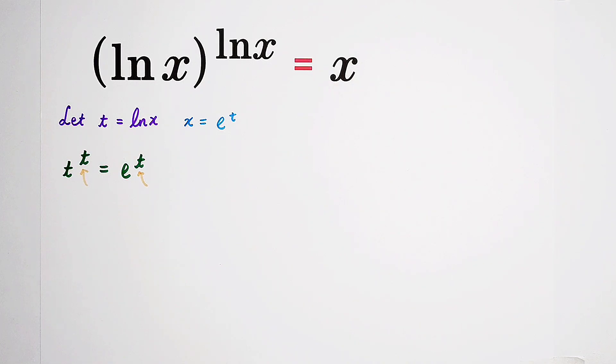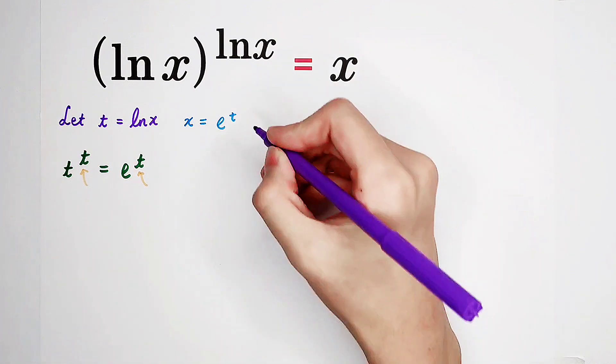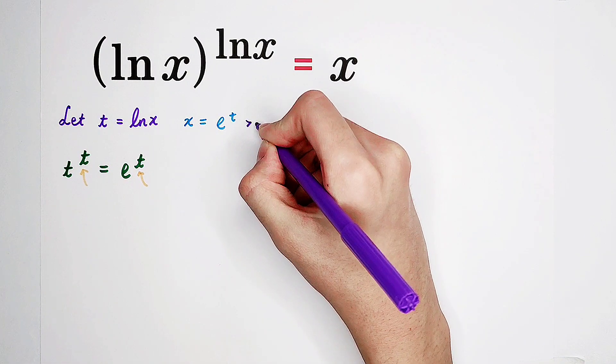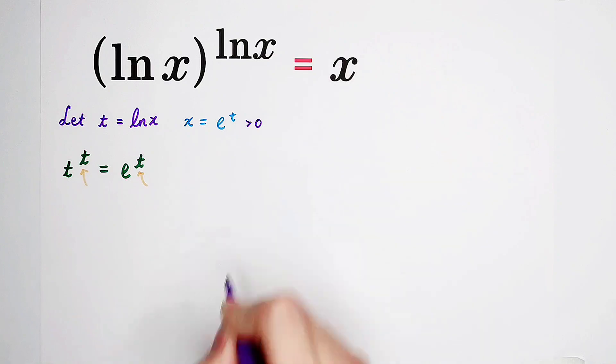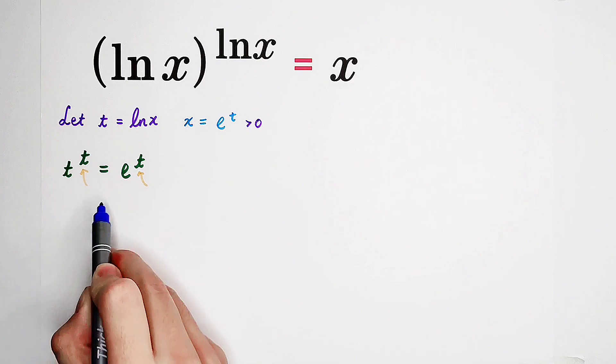However, we know that e to the power of t is an exponential function, and the range of any exponential function is always positive. So it implies that x should be positive. Because e to the power of t is positive, that means now we can divide both sides by e to the power of t.